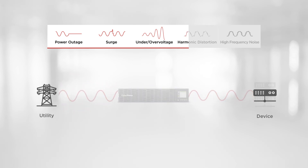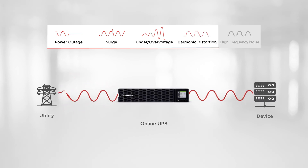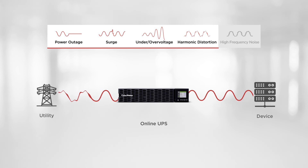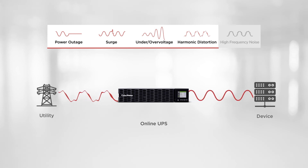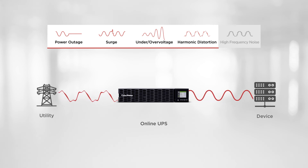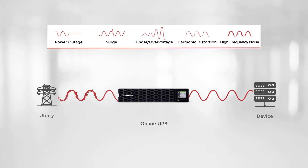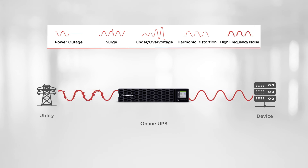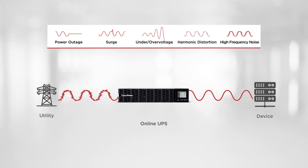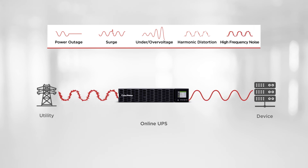Lastly, an online UPS adopts advanced online double conversion topology to offer protection against harmonic distortion and high frequency noise, providing the best power quality, regardless of power conditions.